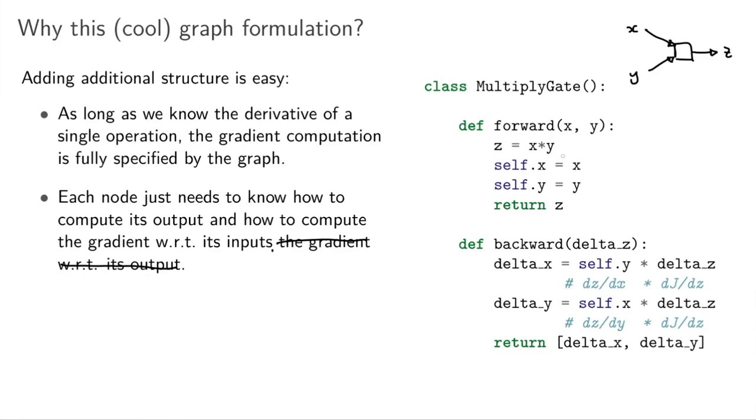then for the forward pass, it's obvious. You just have Z equals X times Y. And then for the backward pass, if you want to calculate the partial derivatives, all you need to do is tell me how do I get the error signal for X and how do I get the error signal for Y.